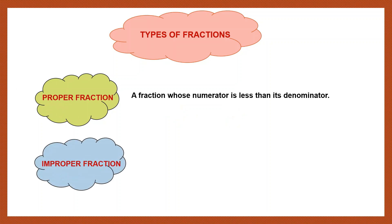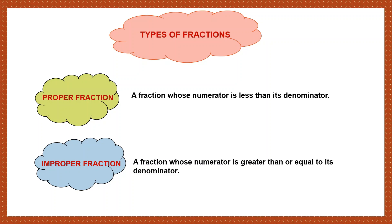Then, we have the improper fraction. What are improper fractions? A fraction whose numerator is greater than or equal to its denominator. Now, suppose I take a fraction 8 by 5. Can you see that the numerator 8 is greater than the denominator 5? Such a fraction where the numerator is greater is called an improper fraction.